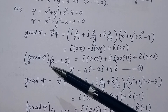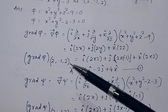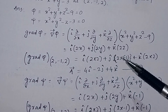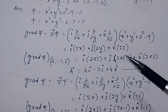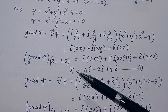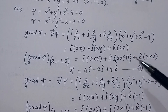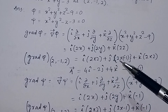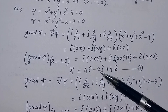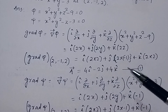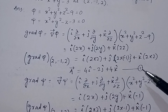So ∇φ = 2x i + 2y j + 2z k. Evaluating the gradient of φ at the point (2, −1, 2) by substituting x = 2, y = −1, z = 2, we get vector A = 4i − 2j + 4k. This is equation number 1.